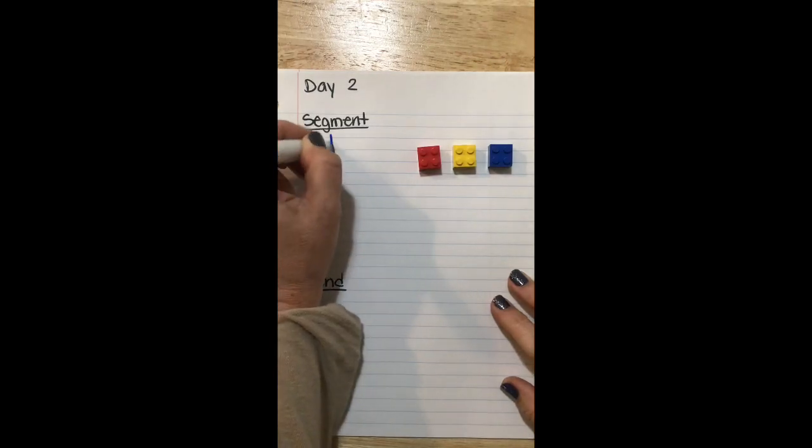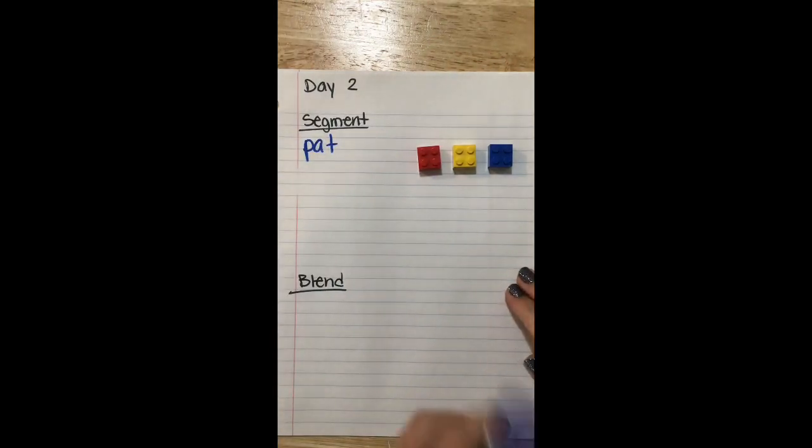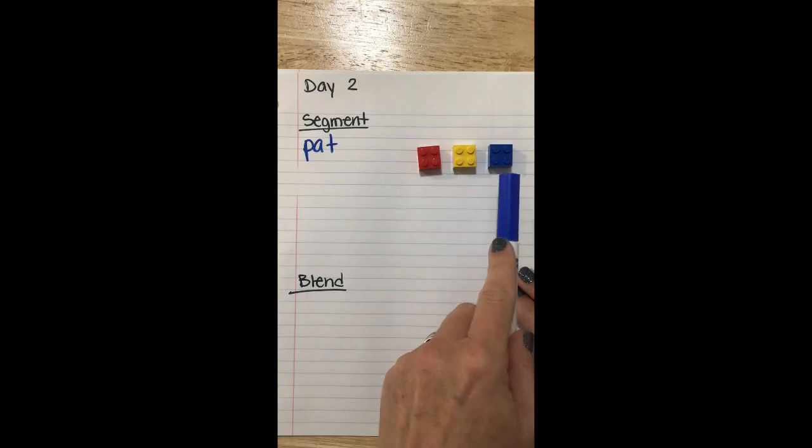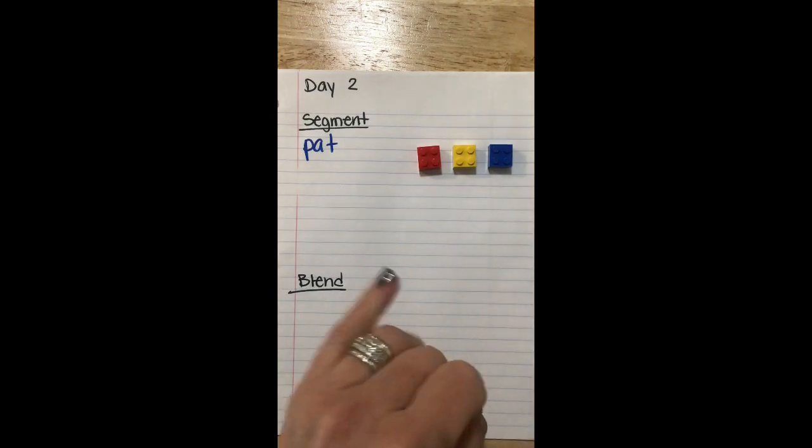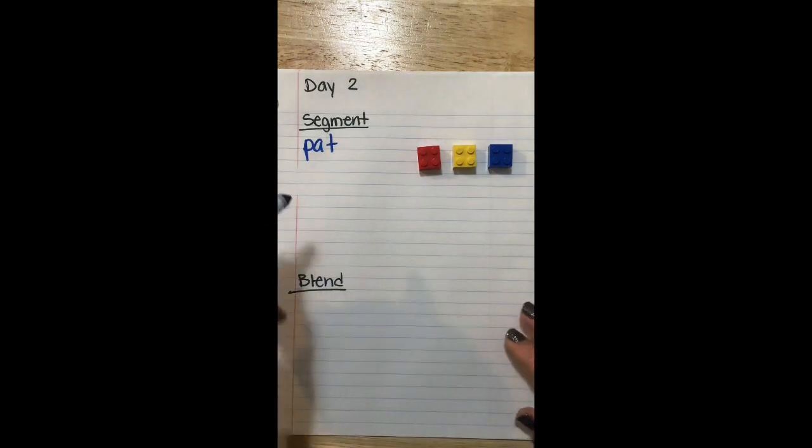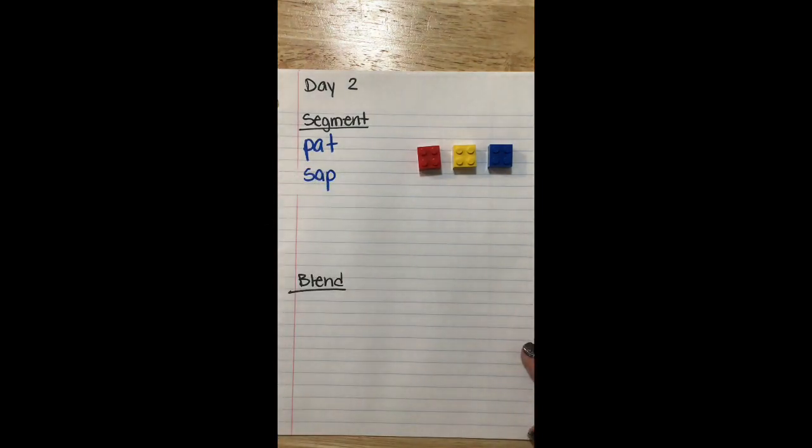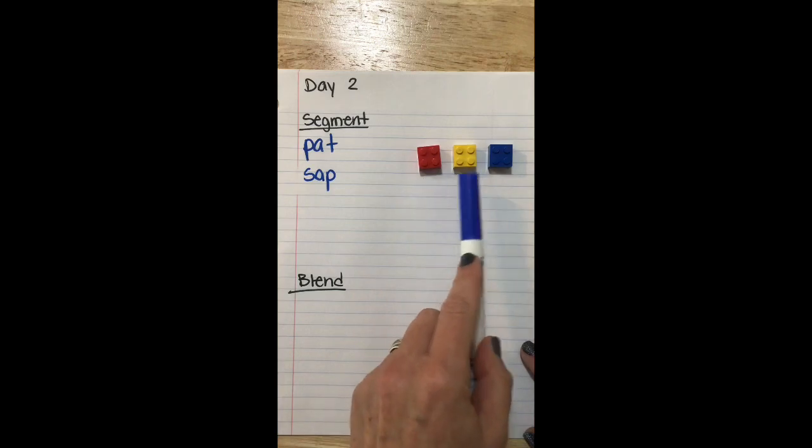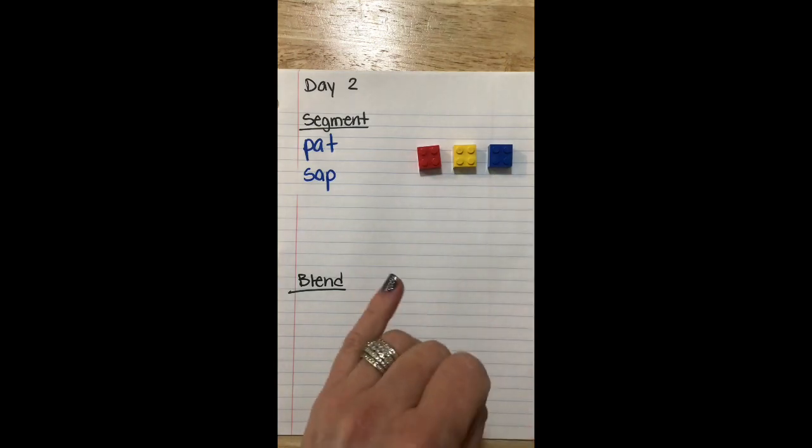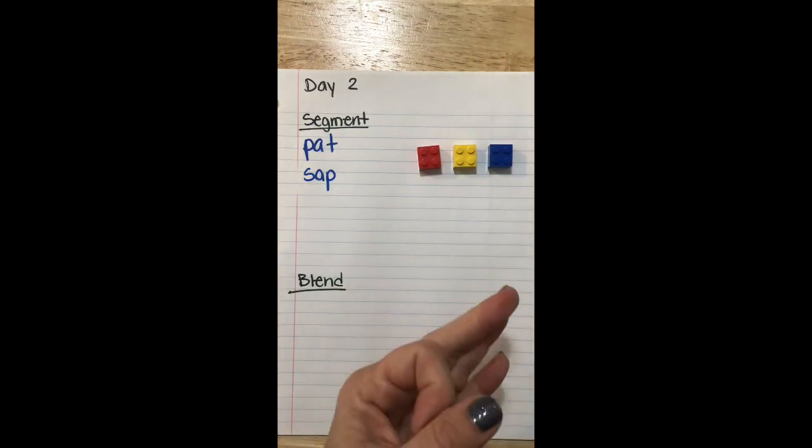Our first segmenting word is PAT. P-A-T, PAT. Next word, SAP. S-A-P, SAP.